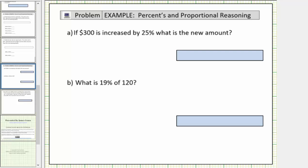Now we'll look at three examples of using a tape diagram or a bar diagram to help solve percent problems. In part A, if $300 is increased by 25%, what is the new amount?